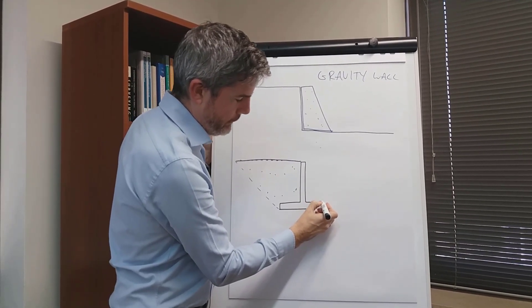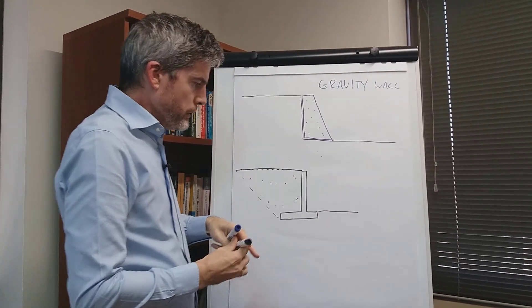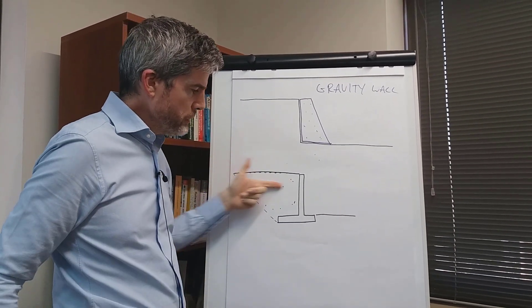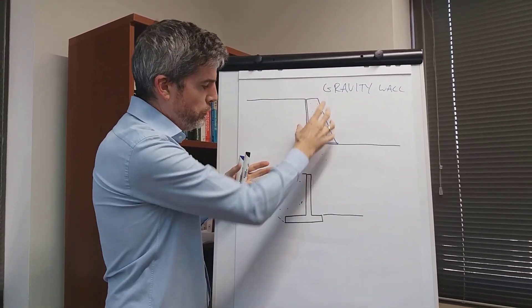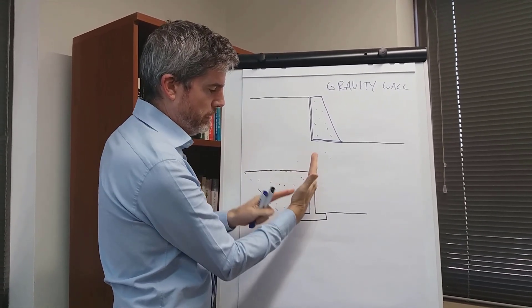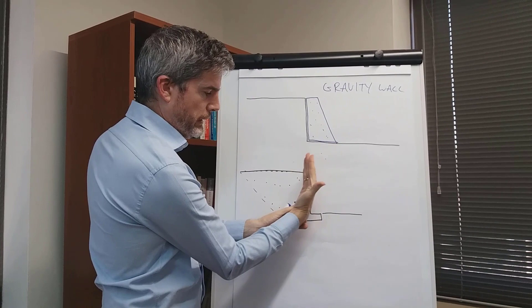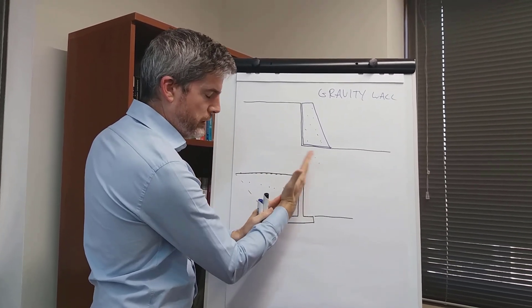When you construct it, you need to cut the slope back, then you backfill in here and that creates your ground surface there, and then you have your ground level in front of the wall.